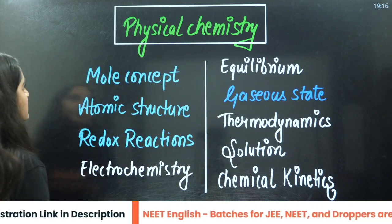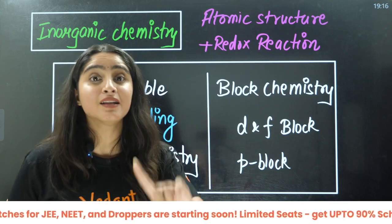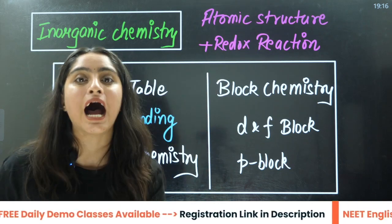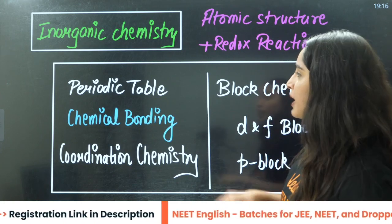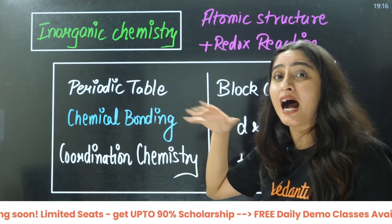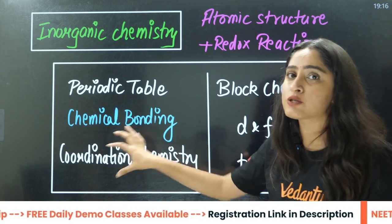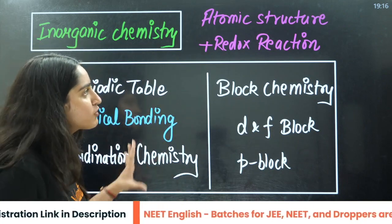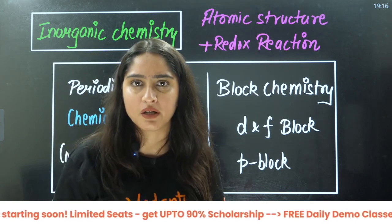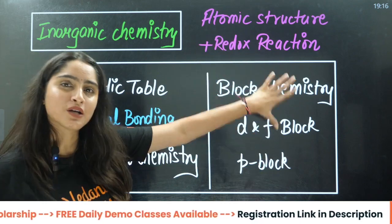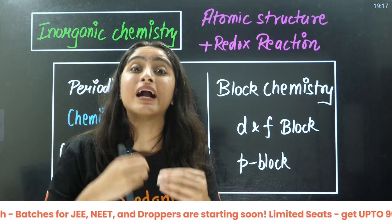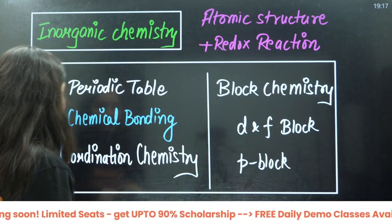For inorganic chemistry, only after completing Atomic Structure and Redox Reactions should you start inorganic chemistry. If you know Atomic Structure, only then can you start the Periodic Table, understand Chemical Bonding, and then understand Coordination Chemistry. After that you can start Block Chemistry. Since Redox Reactions cover oxidation and reduction concepts deeply, those exceptions in Block Chemistry will not be difficult for you.